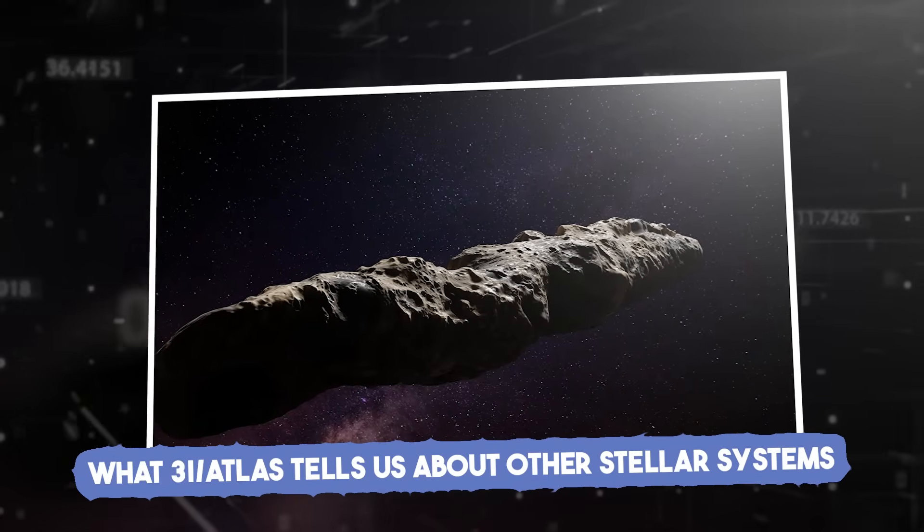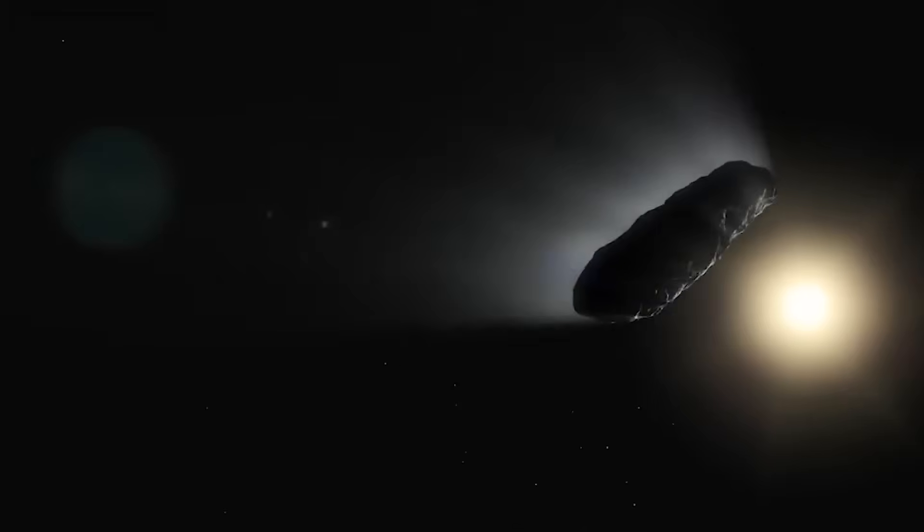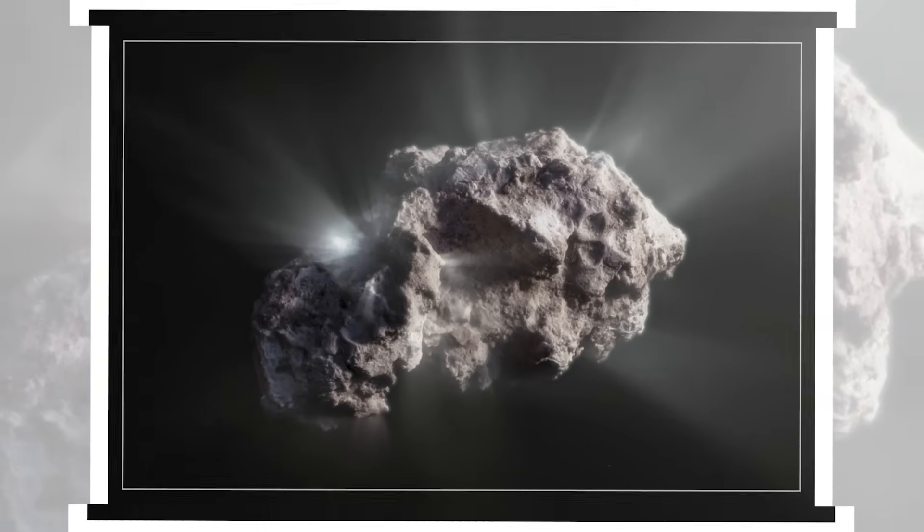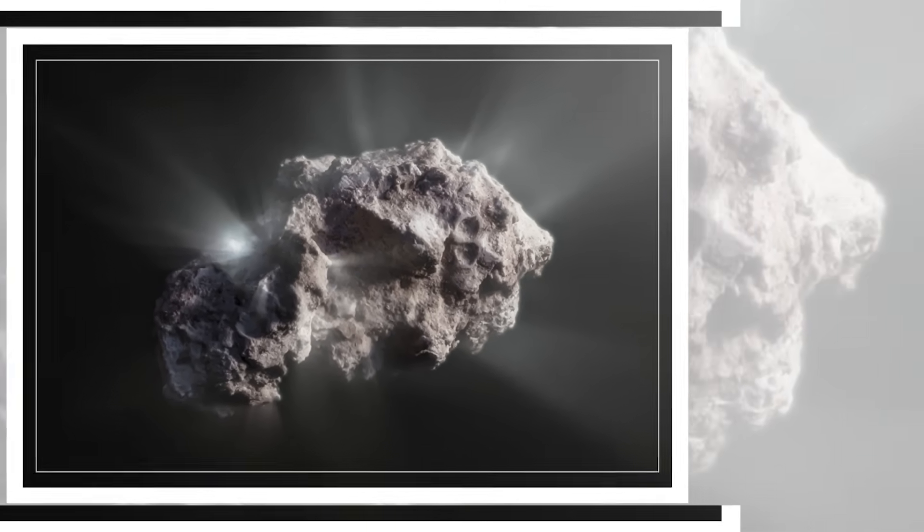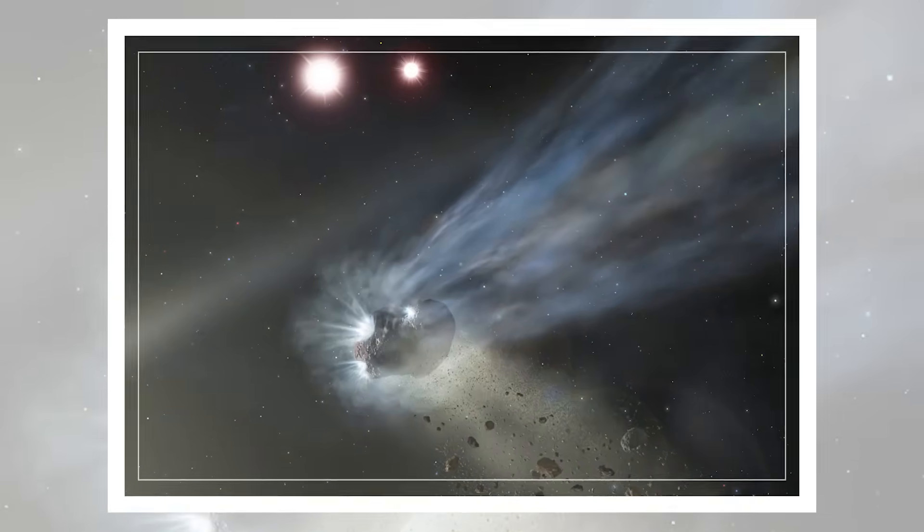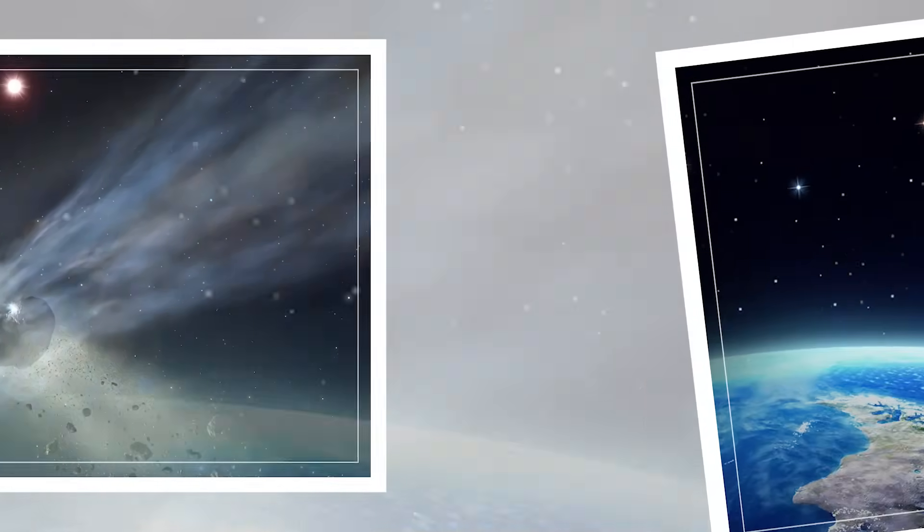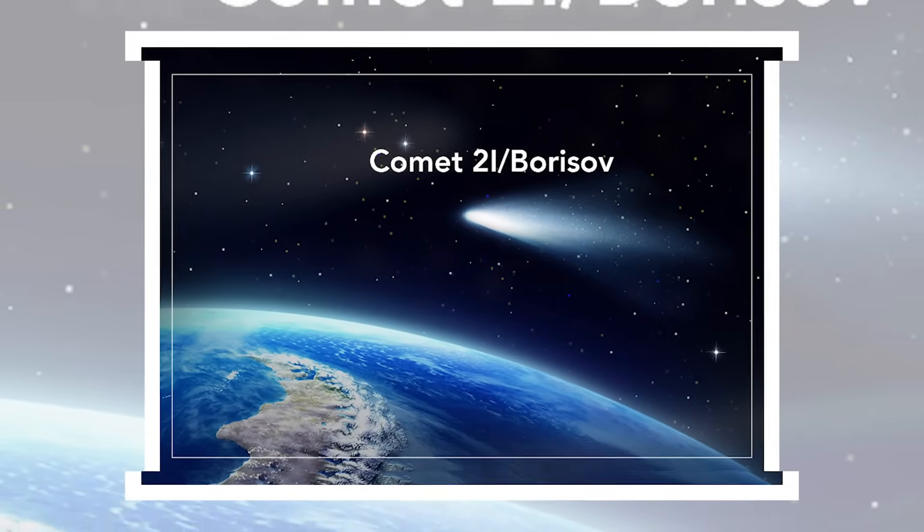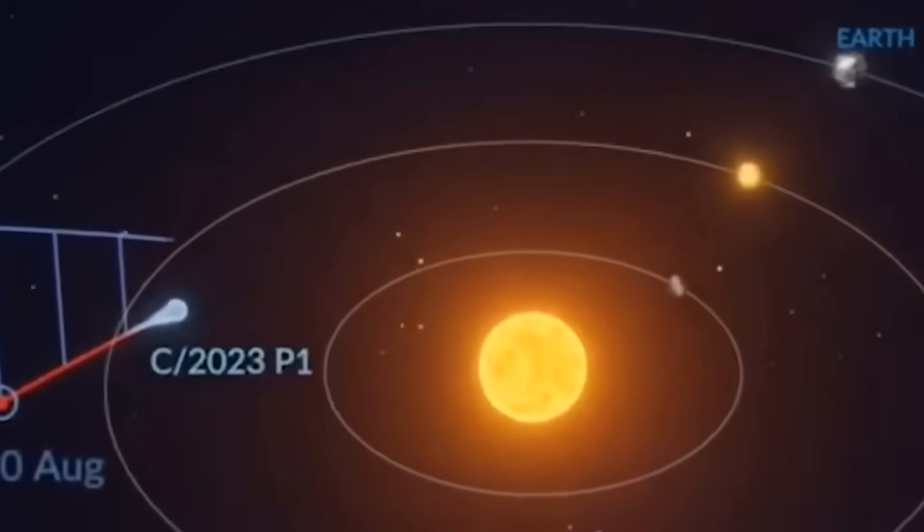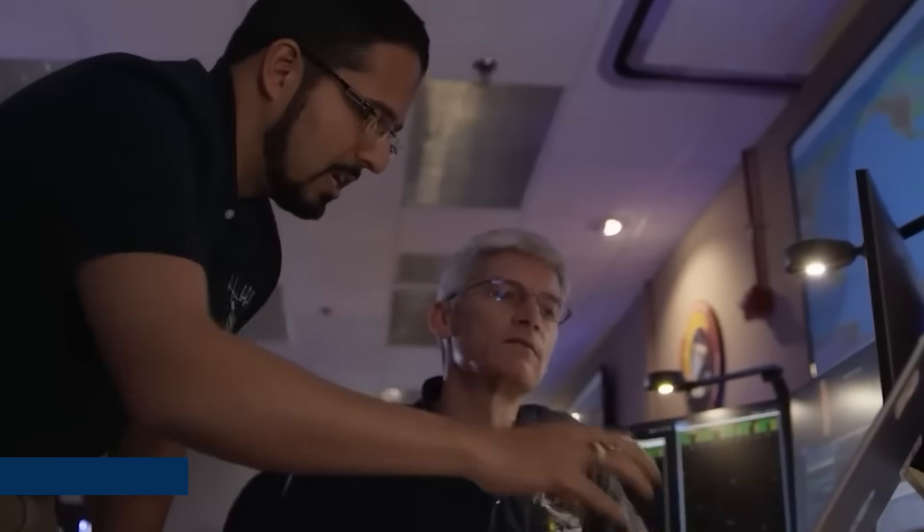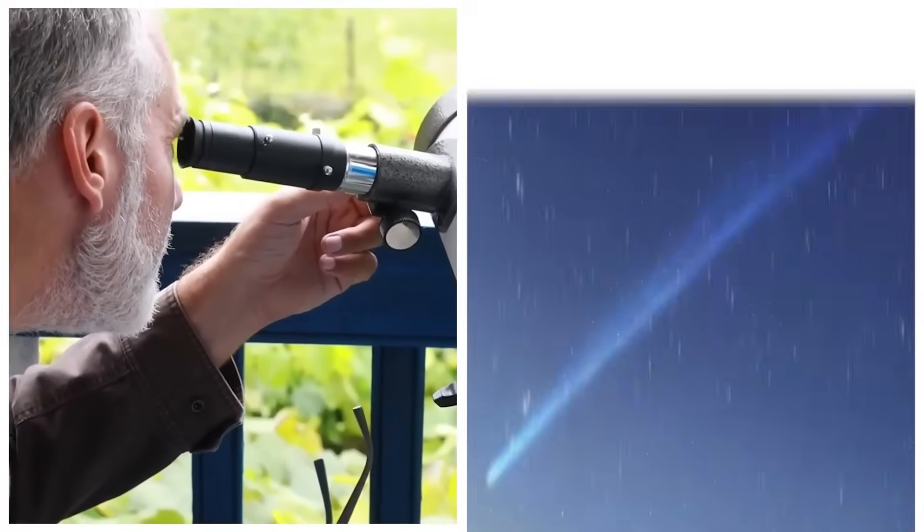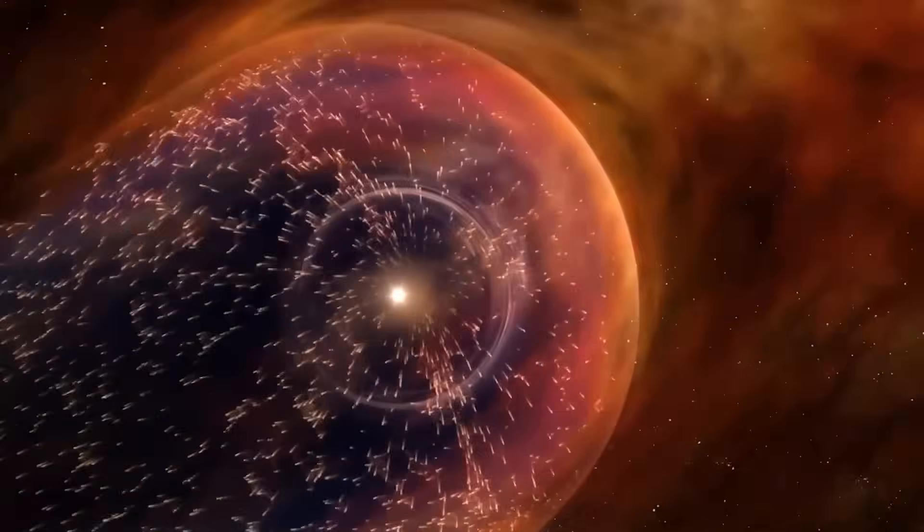3i/ATLAS tells us about other stellar systems. Every interstellar object is more than a rock. It's a message from another solar system. And 3i/ATLAS may be one of the clearest yet. Its composition, orbit, and activity reveal things that don't line up with how we understand our own planetary neighborhood. For starters, the darkened surface, rich in organics and carbon, shows signs of drifting for millions of years through interstellar space. Absorbing radiation, collecting dust, and forming tholins, complex molecules thought to be key ingredients for life. Spectral analysis also picked up cyanide, nickel, and strange outgassing behaviors. A chemical fingerprint that may reflect planet-forming processes in a system unlike ours, one that may have had different ratios of elements, or different temperatures during formation.